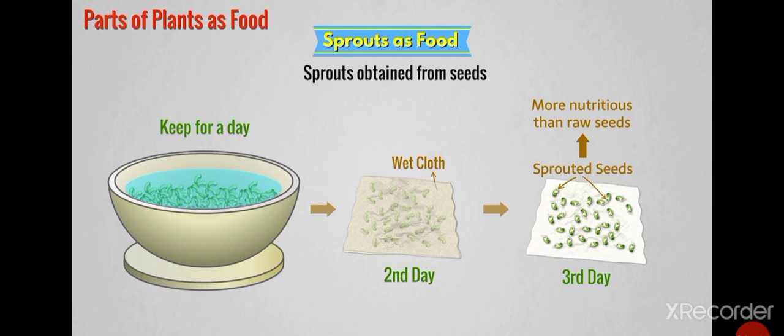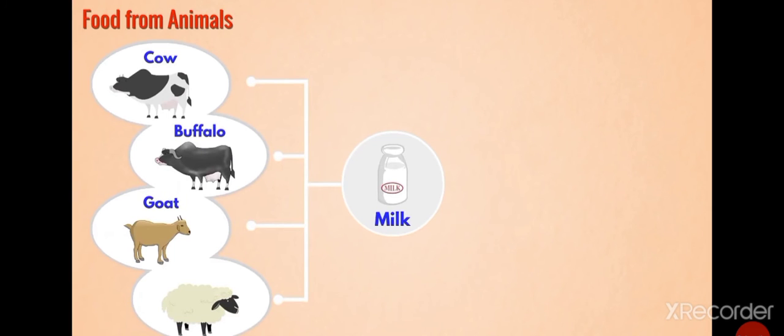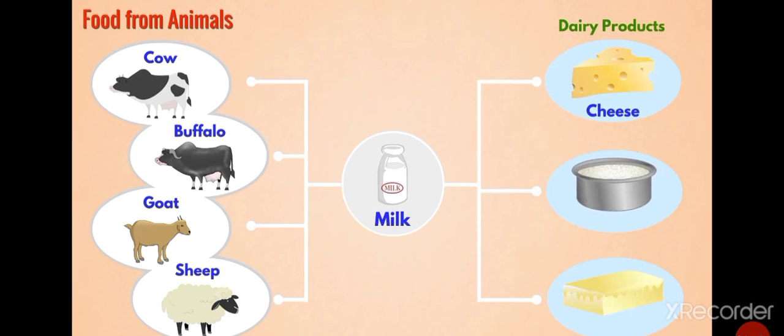Till now, we spoke about the plant parts as food. Now we will understand how do we obtain food from animals. We obtain milk from animals such as cow, buffalo, goat, sheep, etc. From milk, we prepare various dairy products such as cheese, curd, butter, etc.